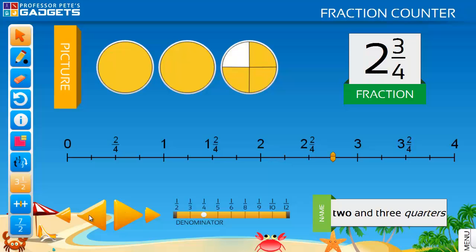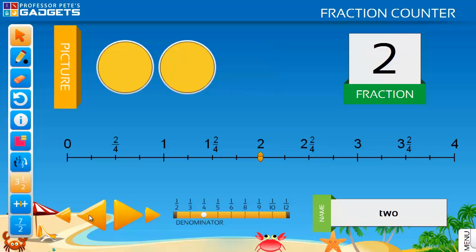Count along forwards and backwards by the selected fraction, taking note of the regrouping that happens when you reach each whole number.